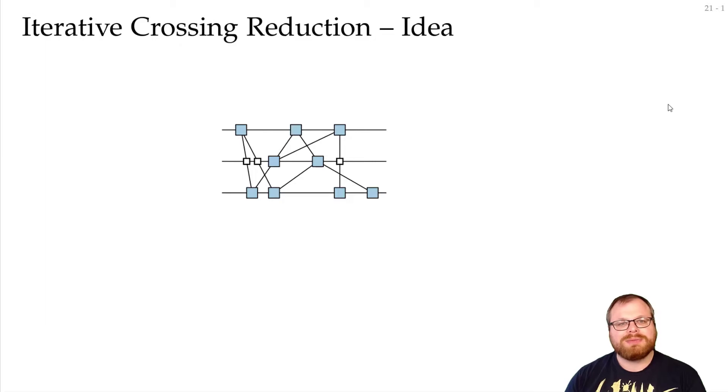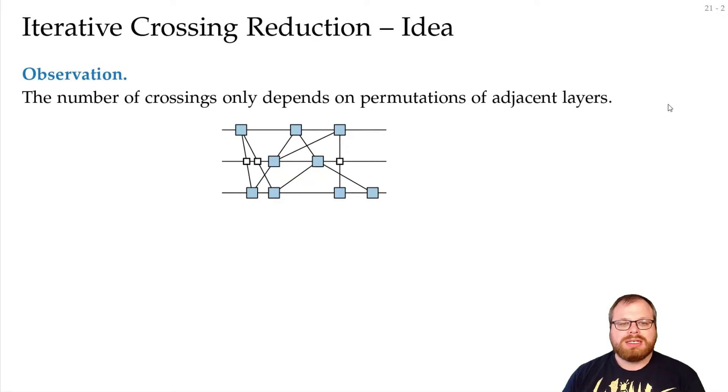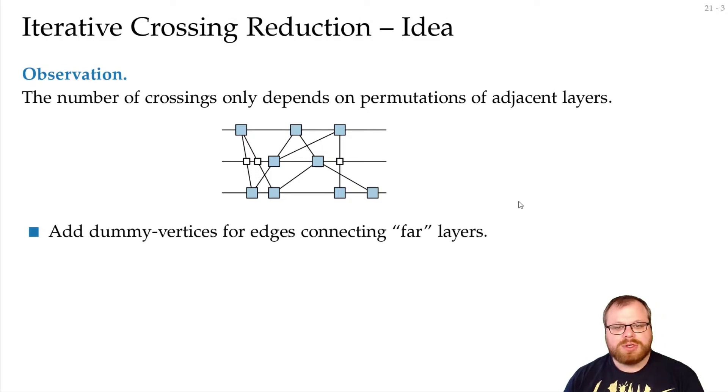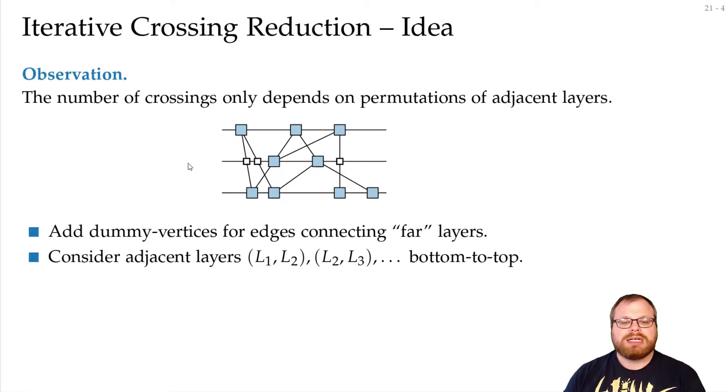Instead, we want to iteratively reduce the number of crossings. The idea is that the number of crossings only depend on the permutations of adjacent layers. These two edges don't care what happens down here, they only care about the vertices here and here. So we add dummy vertices for edges that connect far layers, and then we only consider adjacent layers from bottom to top - first the first two, then 2 and 3, then 3 and 4, and so on.